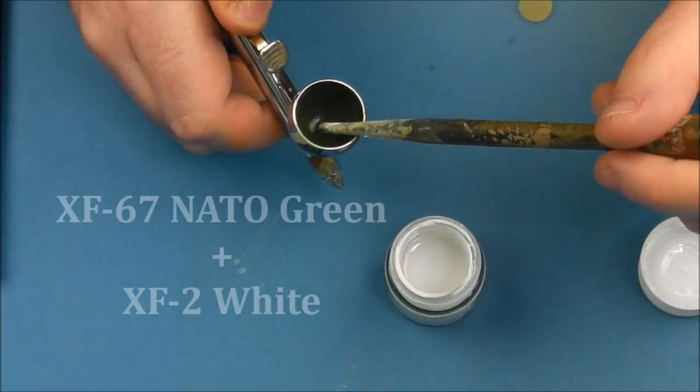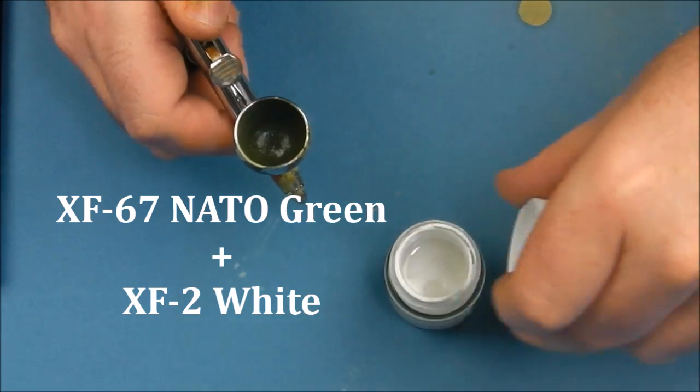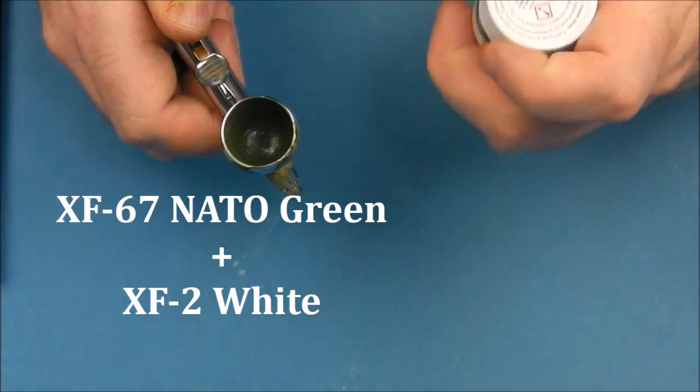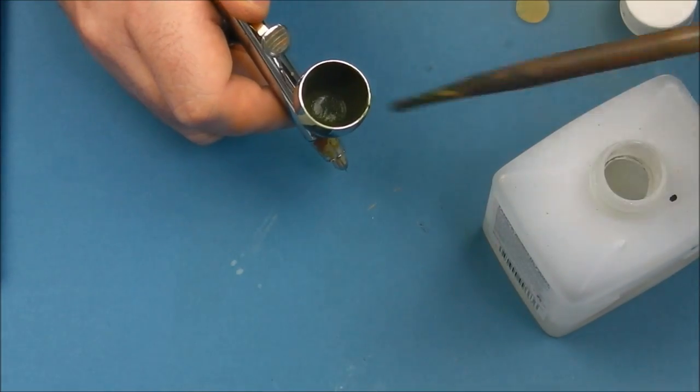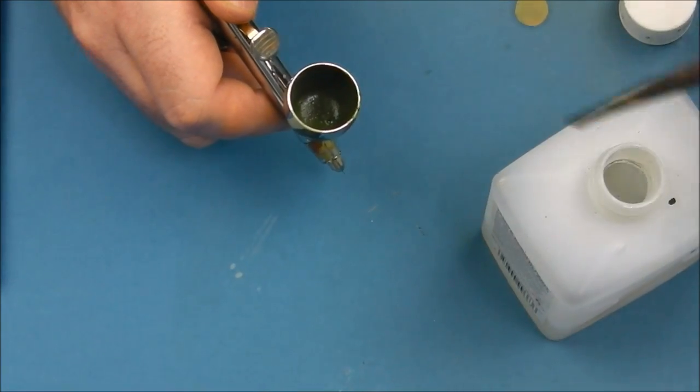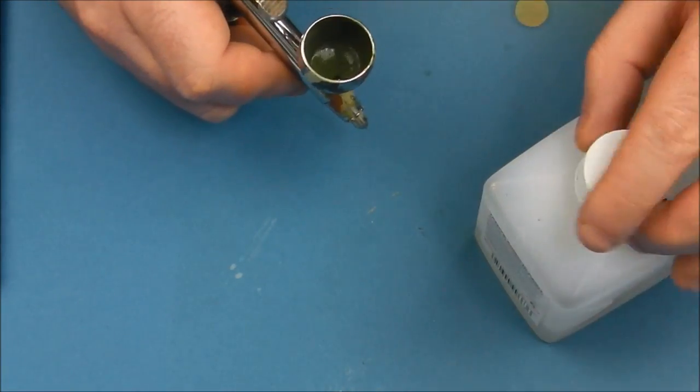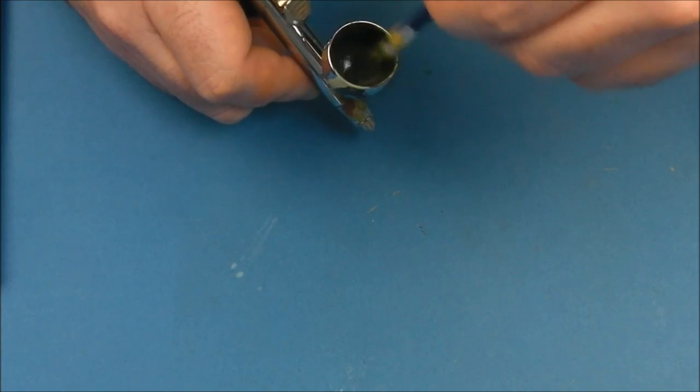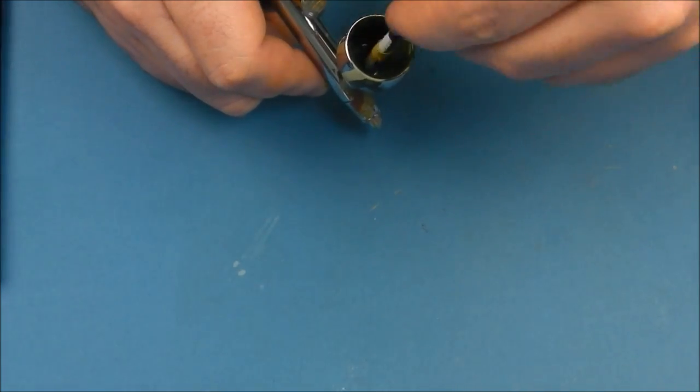I'm just going to add some basic highlights and add a drop of XF2 white to our NATO green and put a little bit more thinner into it. I want this to be pretty light and transparent and I'm just going to put this slightly lighter color into the centers of any of the larger green areas that we put down.